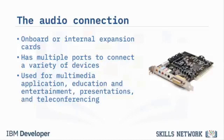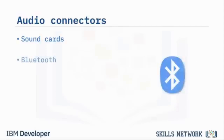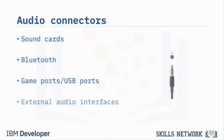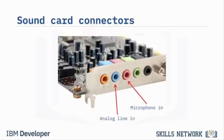Audio input and output devices use different types of connectors, such as sound cards, Bluetooth, game ports or USB ports, and external audio interfaces. The number of connectors or ports on a sound card depend on the requirements. These ports accept a 6.35mm TRS jack or a 3.5mm TRS mini jack. The ports are usually labeled but are also color coded for easy identification. At a minimum, a sound card offers a light blue analog line-in, a pink microphone-in, and a lime green audio line-out connector.